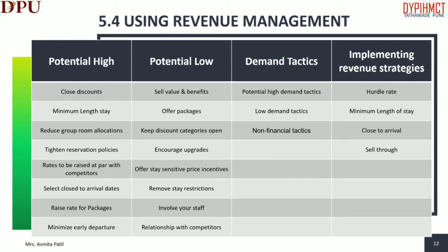Minimum length of stay: a minimum length of stay restriction can help a property increase room nights. For groups, study their patterns and decide how many days they are likely to add to their stay. Reduce group room allocations and communicate with group leaders regularly to make sure the group actually needs the number of rooms in its contract — if not, make adjustments. Tighten reservation policies. Rates should be raised at par with competitors.